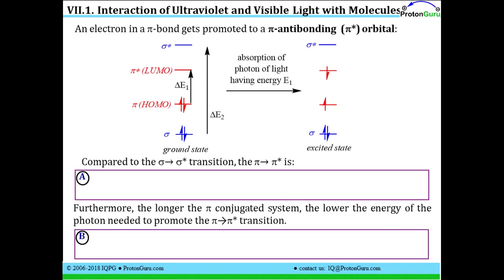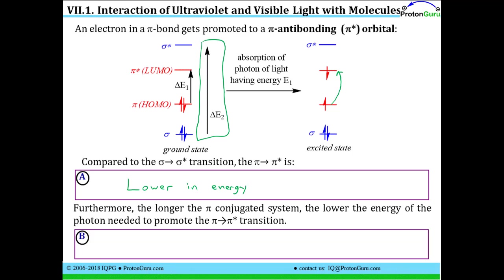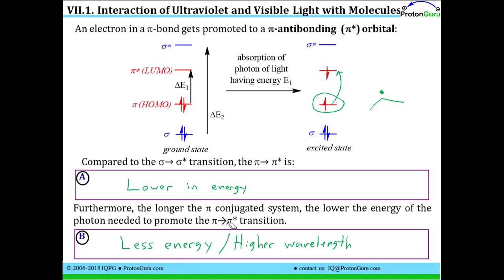When you look at the energy of absorption, the energy of light absorbed that causes an electron to be promoted from a pi to a pi-star orbital — known as the pi to pi-star transition — will be a lower energy than what's needed for the sigma to sigma-star transition. If you have a longer pi-conjugated system, any radical, cation, or anion in that system will be more stabilized by resonance. The longer the system over which you can delocalize an unpaired electron, the more stable it will be, requiring less energy — which corresponds to a higher wavelength — to cause a transition in a more pi-conjugated system.